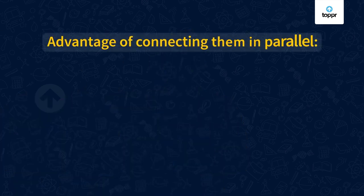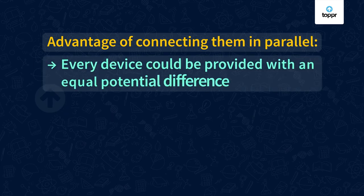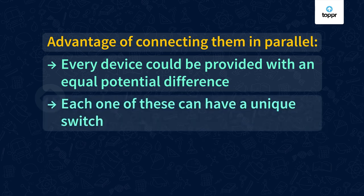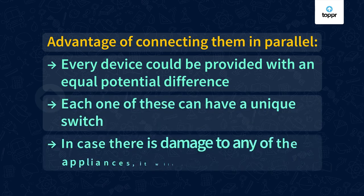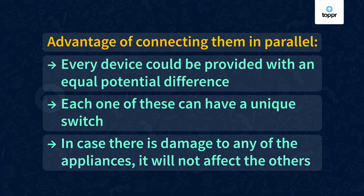A number of separate circuits can be present between the live and neutral wires, with each circuit connecting different appliances. The advantage of connecting them in parallel is that every device can be provided with an equal potential difference and each one can have a unique switch. Also, in case there is damage to any of the appliances, it will not affect the others.